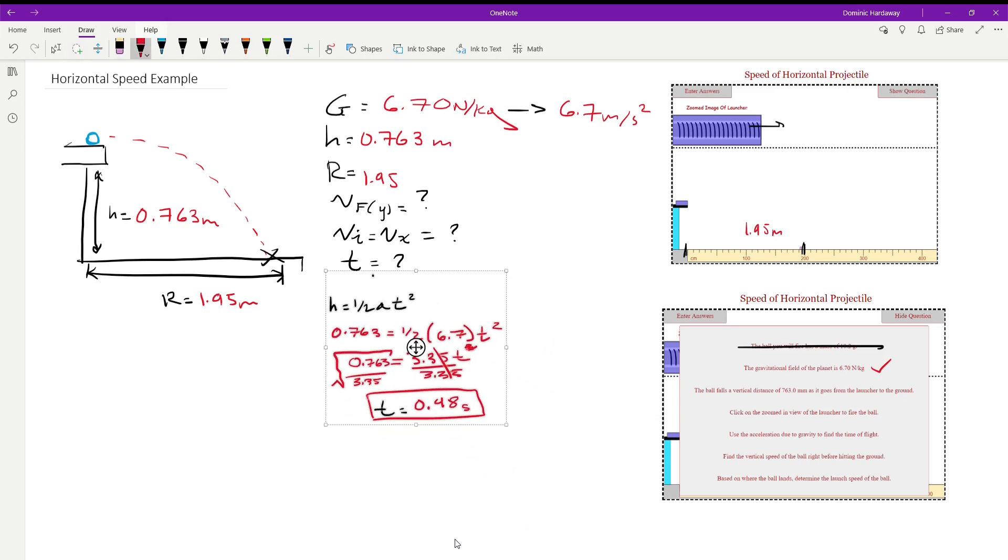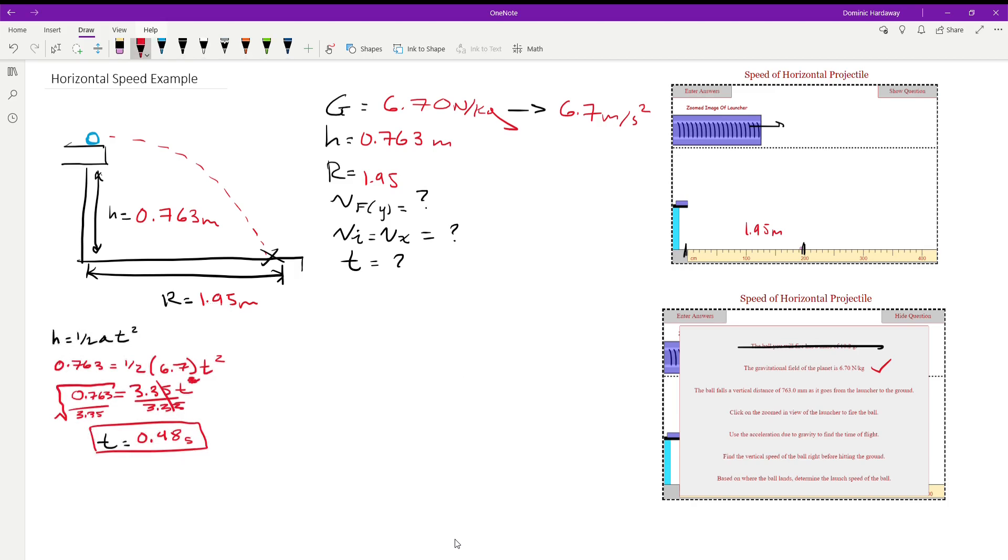And we already have our first variable solved. So we're going to go ahead and box this up and move it over here. And before we move on, I just want to say that when you enter your answers into this website, it's going to want the time in milliseconds. So we're just going to do that quick conversion here. We're going to multiply the seconds that we get times 1,000 to get 480 milliseconds. So there's our time.